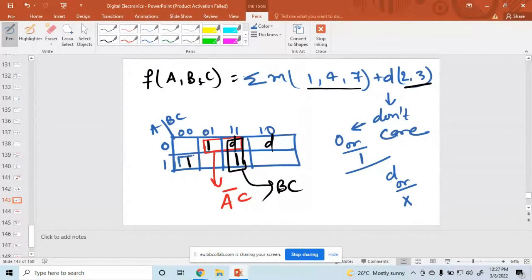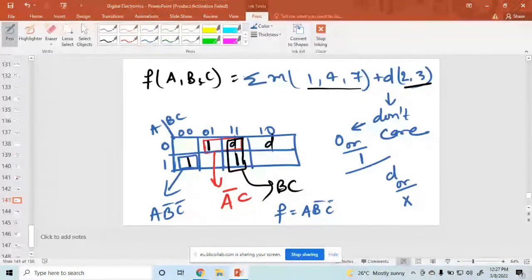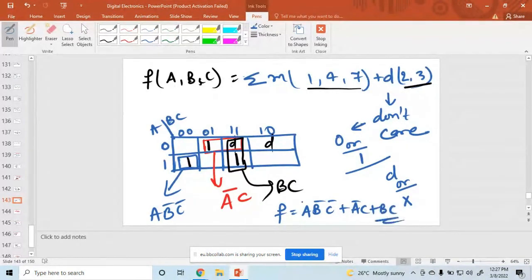No single. Then single bit - what is the value of this? A B bar C bar. No need to pair this one. If the don't care is required then we use it, if not required no need to use that one. That's why the term is called don't care. And the value is: this function equals A B bar C bar plus A bar C plus BC. I hope everyone understood.